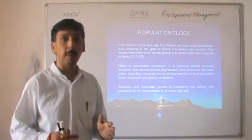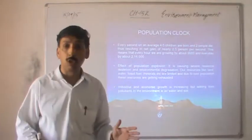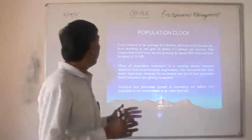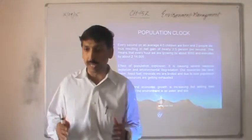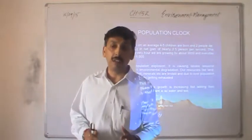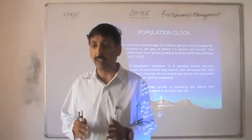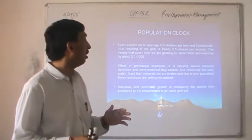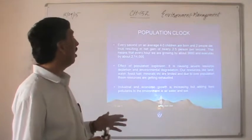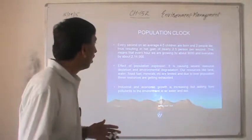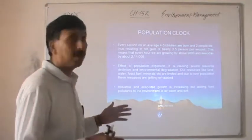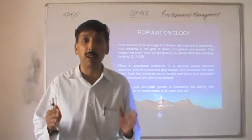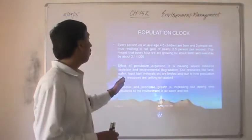How can we define population clock? Every second on an average 4 to 5 children are born, out of which 2 children die, resulting in a net gain of nearly 2.5 persons per second. This means that every hour we are growing by about 9,000 people and every day by about 214,000. By 2050, India will be the most populous country of this world and will surpass China.